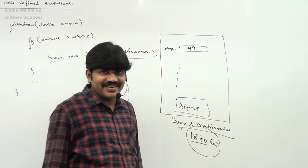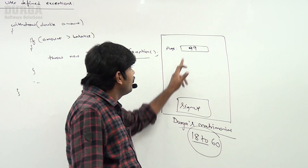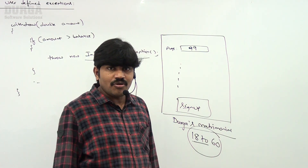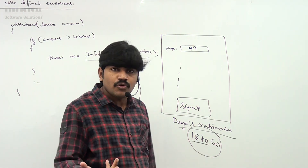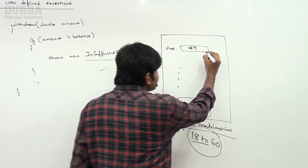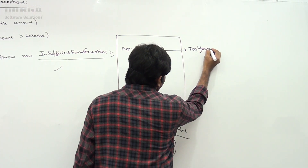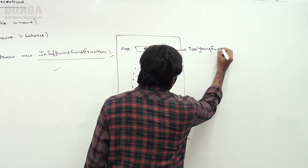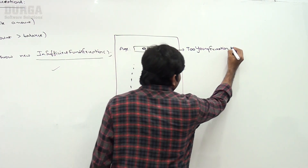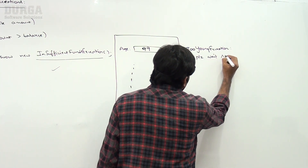If a person tries to register in my matrimonial site with 99 years of age, can I accept this request? No — as per my limit I won't accept. Then what I have to do is raise an exception saying TooOldException. And if a 14-year-old tries to register, I raise a TooYoungException — 'Please wait some more time, you will get the best match.'